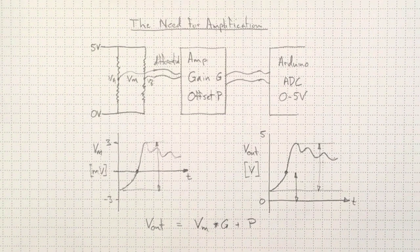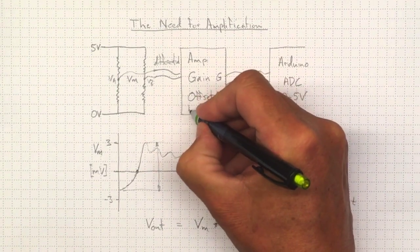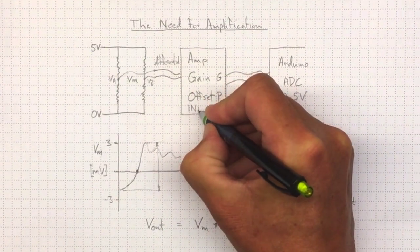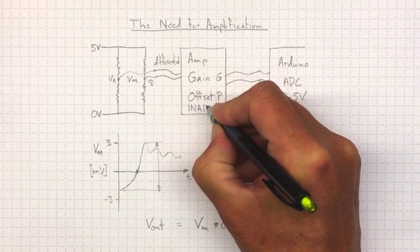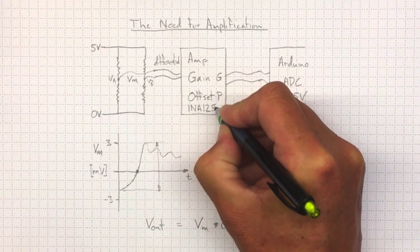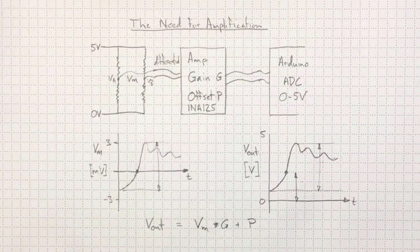Now we're going to look a little later on to find out how we actually get that from an instrumentation amplifier, which is an INA125, the part that we're going to use in our labs.